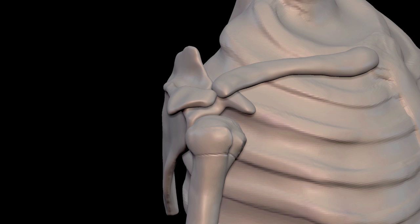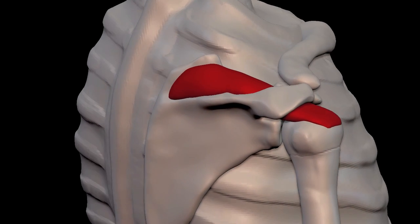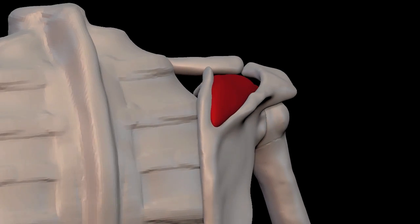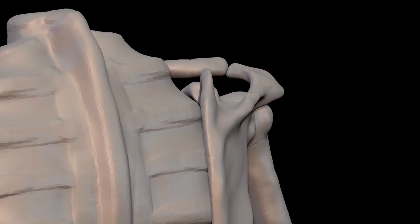The supraspinatus goes underneath the clavicle and this part of the scapula which is called the acromion process. This angle highlights the area that it occupies as it goes under the acromion process and the clavicle.